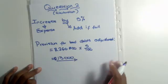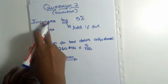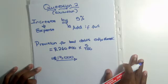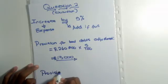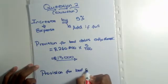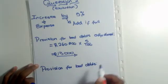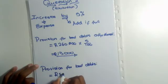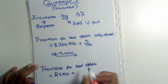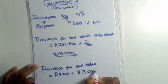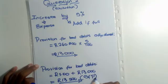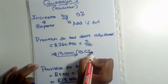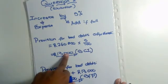This R13,000 is the provision for bad debts adjustment as a whole. We already know we are increasing, so it goes to expenses. If you were dealing with the Statement of Financial Position, you would calculate the new provision for bad debts as R500 (from the trial balance) plus the adjustment of R13,000, giving R13,500. However, in the Statement of Comprehensive Income, you only record what you adjusted by — in this case, R13,000.